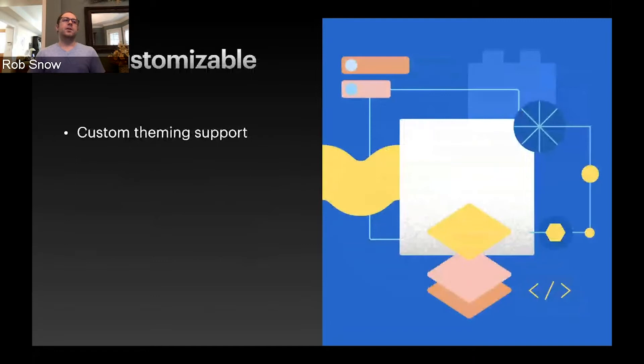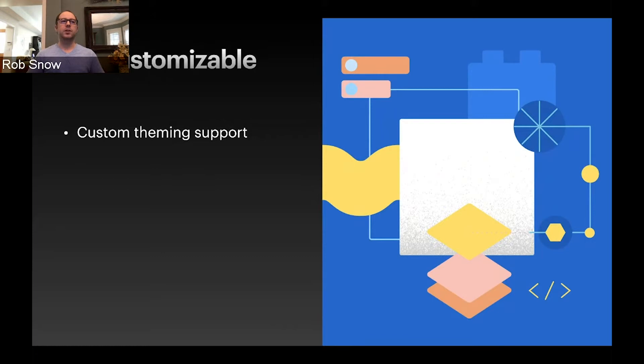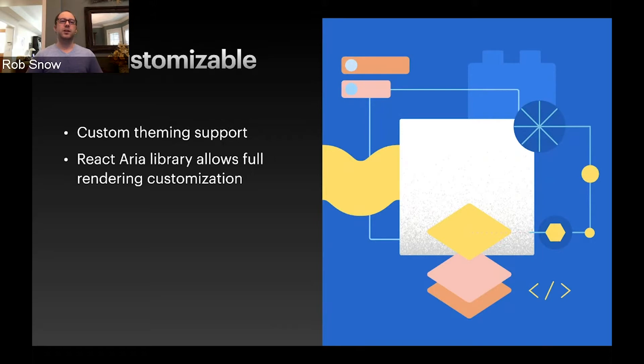React Spectrum also set out to be customizable. While Spectrum is very specific with its styles, we still wanted to give everyone the ability to change what they need for their own designs — a little more flexibility for those outside of Adobe. We also allow for custom themes on top of React Spectrum, but if you really need more flexibility, you can use our lower-level hooks in React Aria to control how you render. I'll touch on that a little bit later in the presentation.